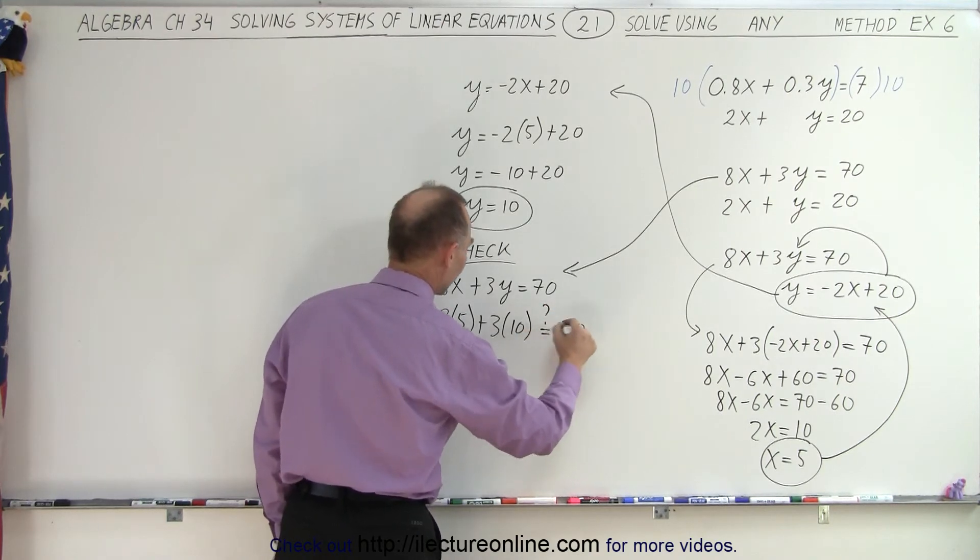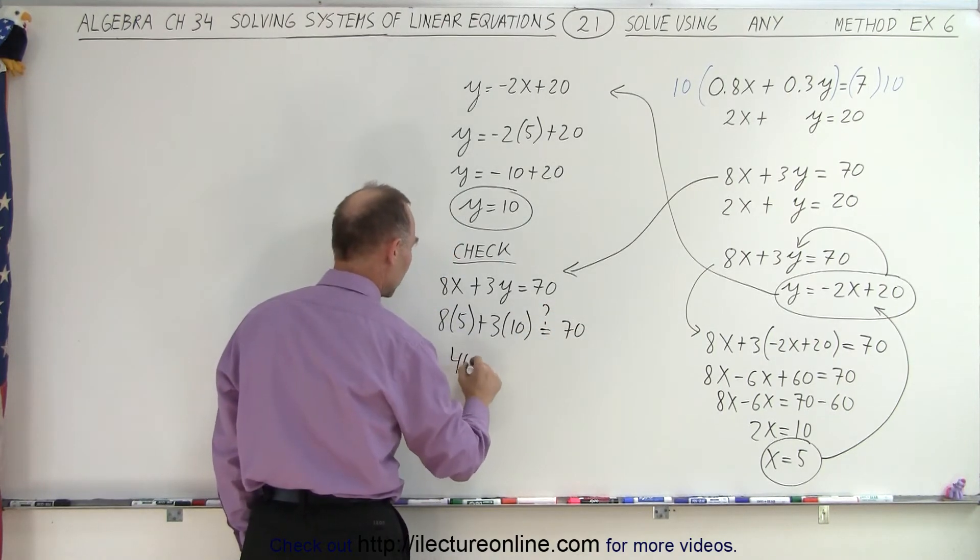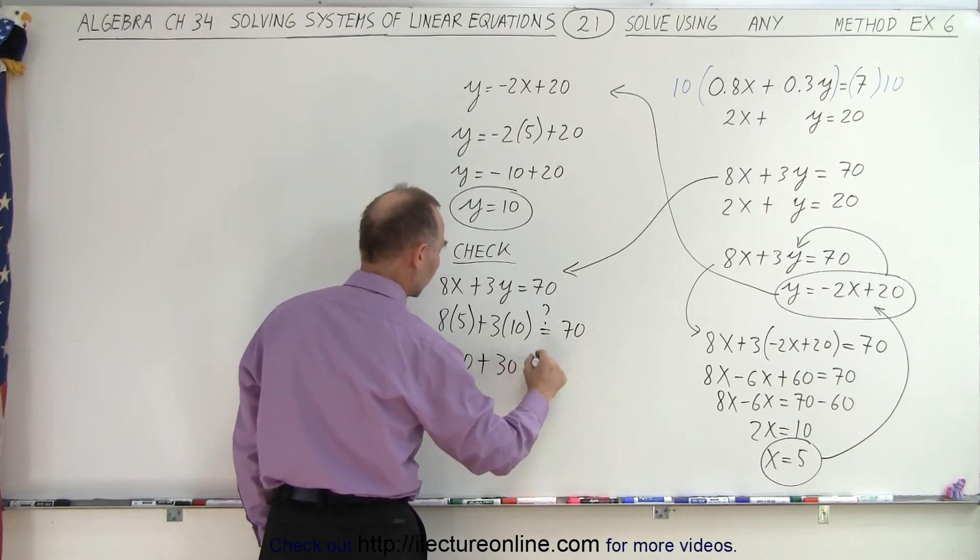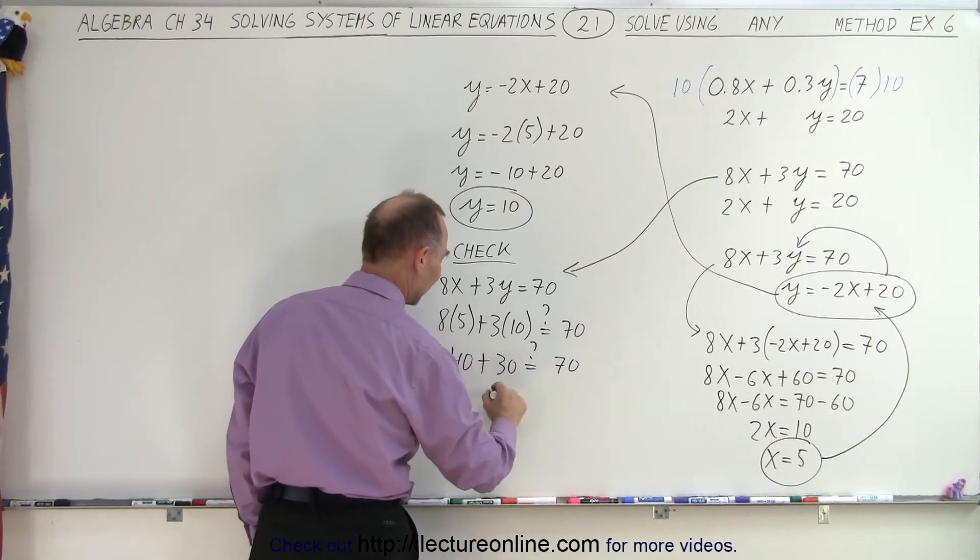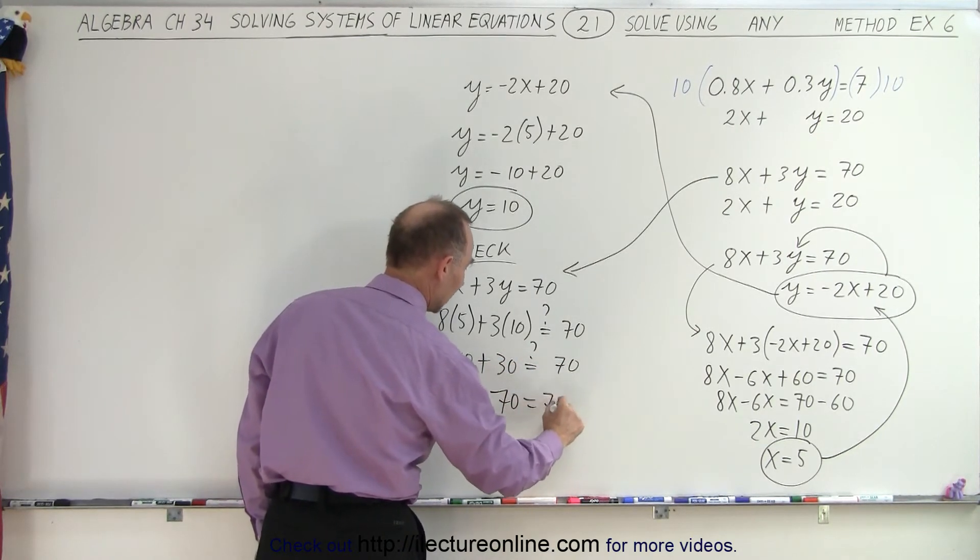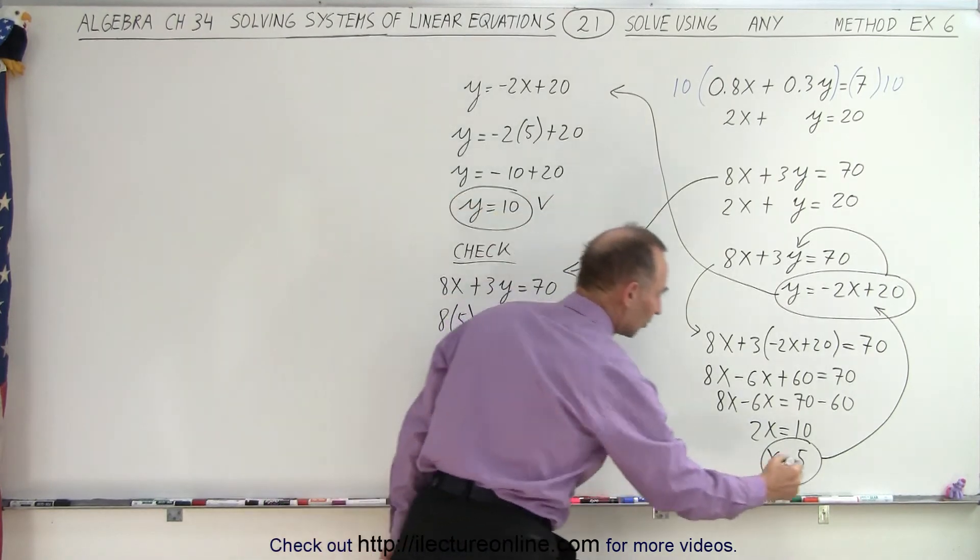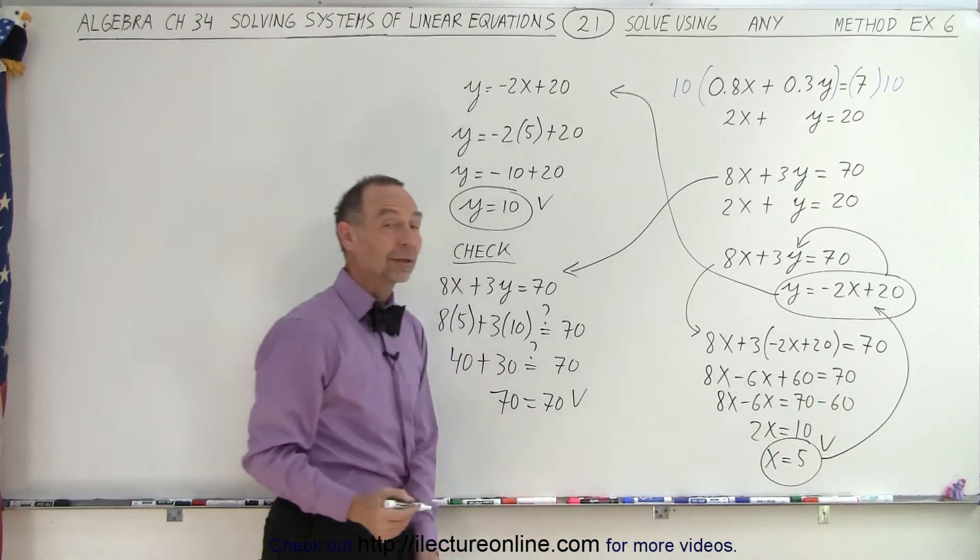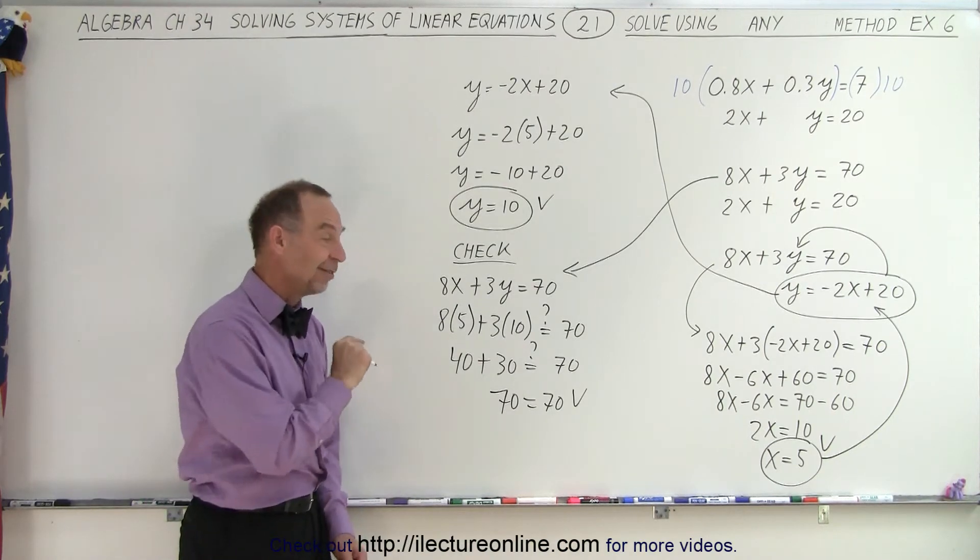Should be 10 right there. Is that question mark equal to 70? So this is going to be 40 plus 30 equals question mark 70. And obviously 70 equals 70. So it looks like the two values that I got for x and y look like they're correct. And that is how it's done.